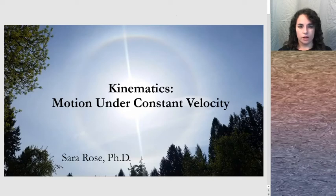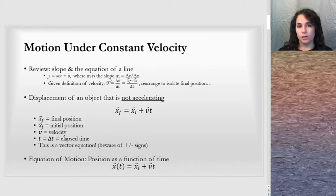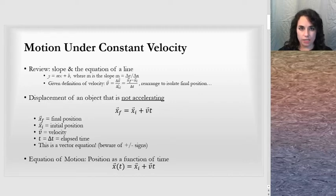This is a lesson on motion under constant velocity in the kinematics unit. Motion under constant velocity can be described by a single equation. Because it's constant velocity, it will have the equation of a line, where slope equals m, and the equation is y equals mx plus b. The slope in this situation will be the velocity. The velocity is constant, which results in a constant slope.